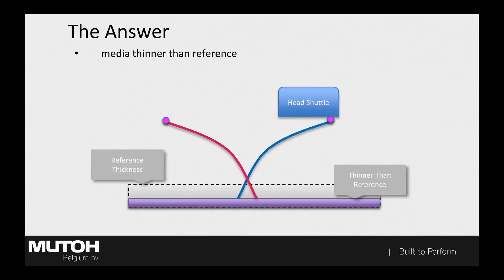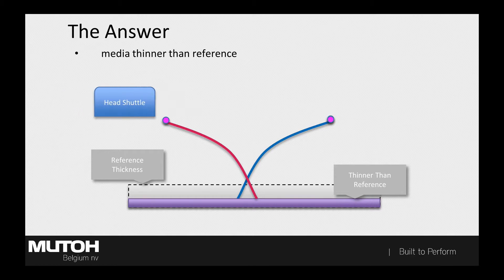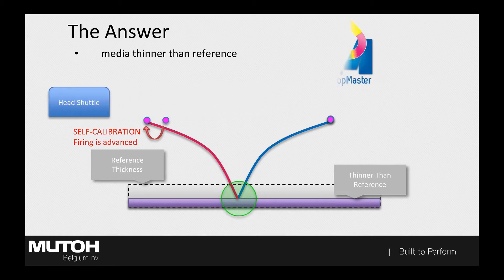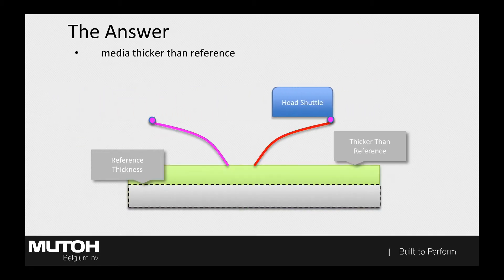This is what happens. When the unidirectional drop shifts to the right, the ValueJet 1638X knows precisely where that drop will fall. How so? Because we know how the characteristic curve of each individual drop, regardless of its size, looks like. With that knowledge, the bi-directional timing can be recalculated to meet the new target, and it does this on the fly.